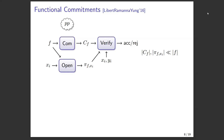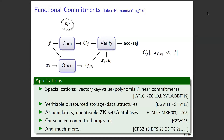Functional commitments have tons of applications. Specializations like vector commitments, polynomial commitments, and linear commitments are all special cases. You can use this structure for verifiable outsourced data storage, outsourced databases, data structures, accumulators, updatable zero-knowledge sets, and outsourced committed programs — where you commit to a program and later prove you've evaluated it correctly, or someone else can prove they've evaluated it correctly.